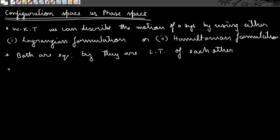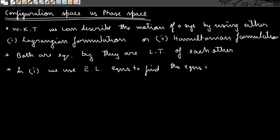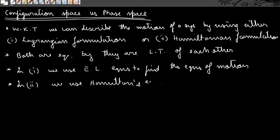In the Lagrangian Formulation, we use the Euler-Lagrange equations to find the equations of motion, whereas in the Hamiltonian Formulation, we use Hamilton's equations. Both of these give the same equations of motion, and that is what I meant by saying that both are equivalent.